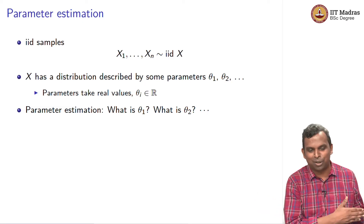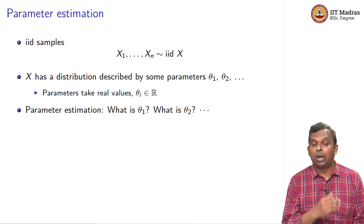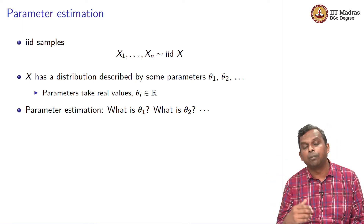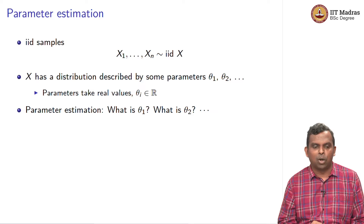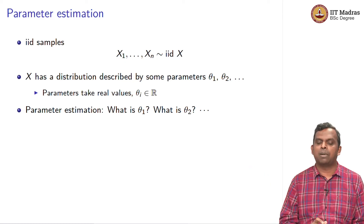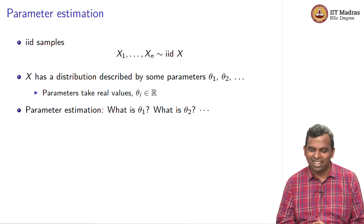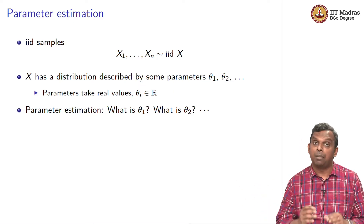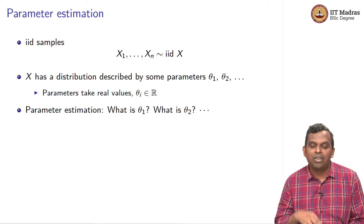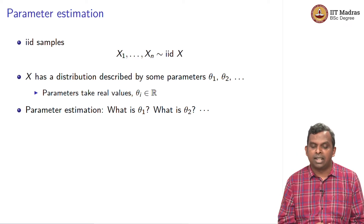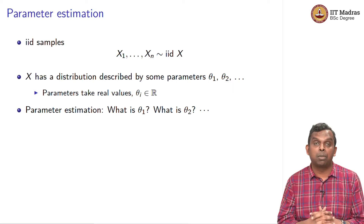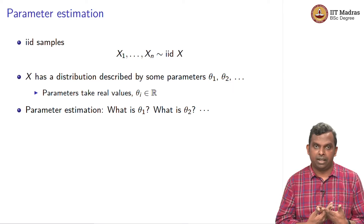Here is the formal setting. You have IID samples x1 to xn from a common unknown distribution. The distribution is not totally unknown — it has some distribution with a few parameters. In general, these parameters are called theta. In most statistics textbooks you will see theta, theta 1, theta 2, theta 3. You may have any number of parameters, sometimes collected into one vector called theta. We will assume these parameters are real-valued. The parameter estimation problem asks: what is theta 1? What is theta 2? Can you estimate them?